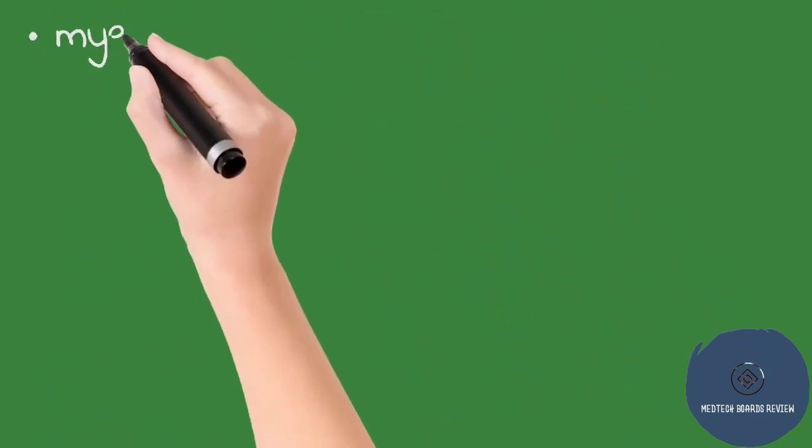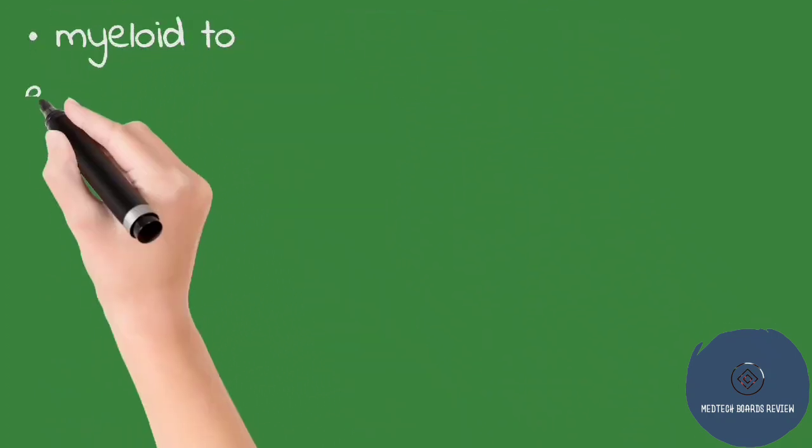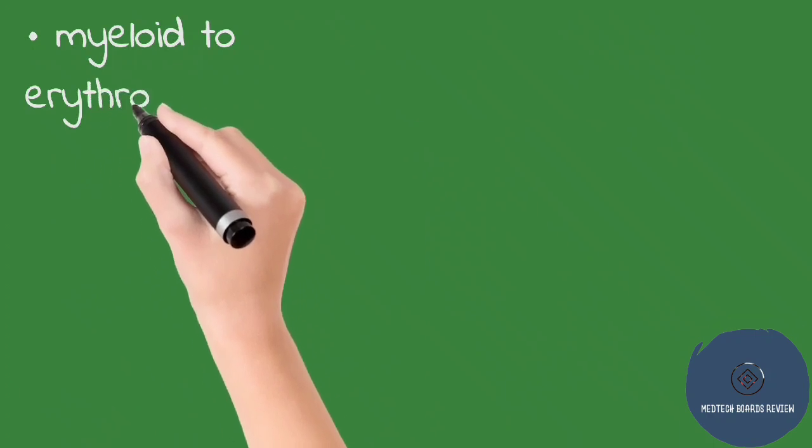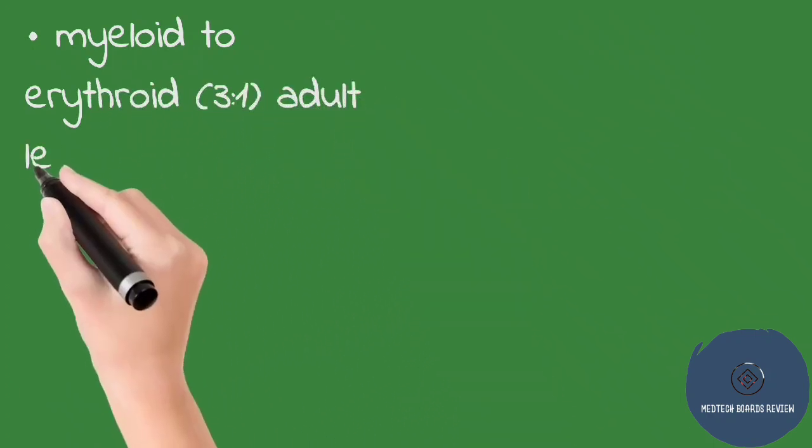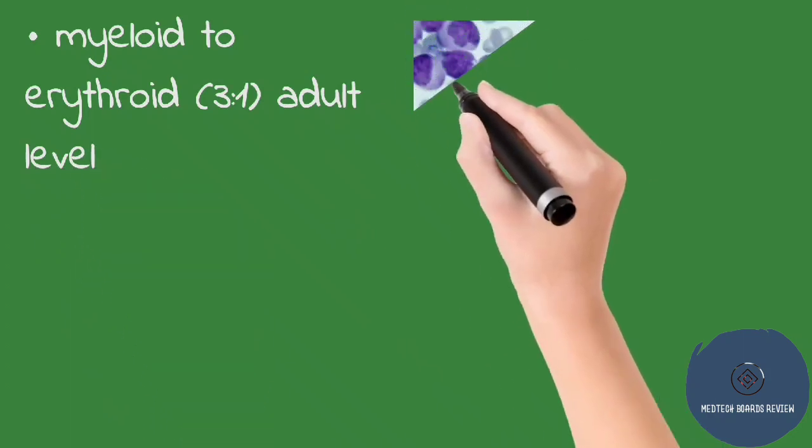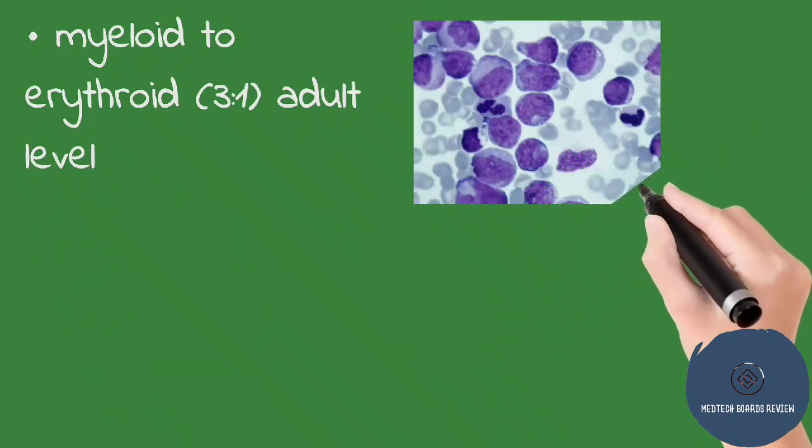In the medullary phase, the myeloid production is very active until it reaches a 3 to 1 ratio of myeloid to erythroid, meaning there are 3 times more production of myeloid than erythroid. That is why it is sometimes called the myeloid phase.